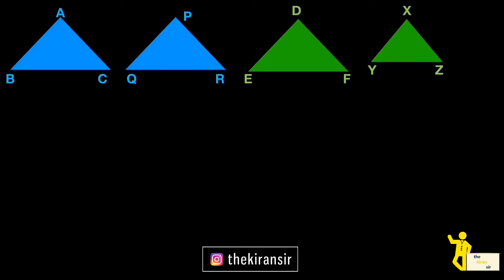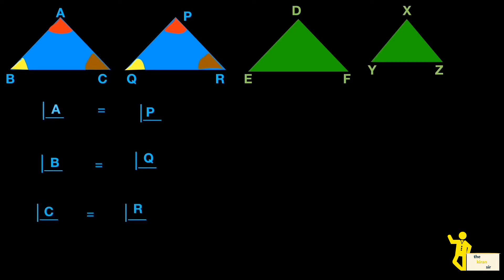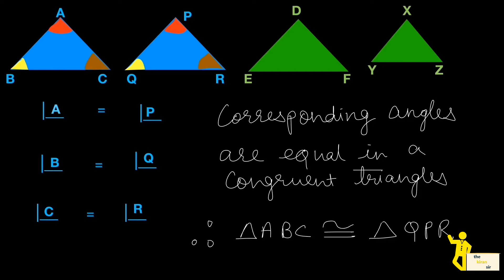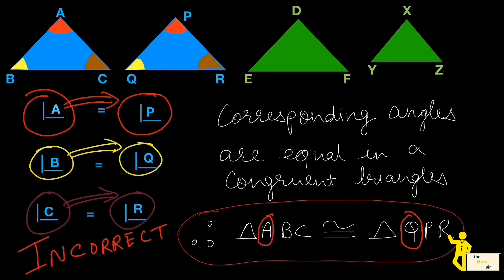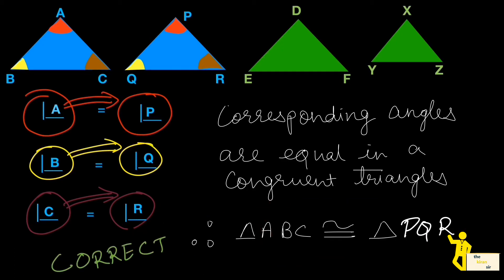Let's say two triangles ABC and PQR are congruent. In congruent triangles, all corresponding angles are equal: angle A equals angle P, angle B equals angle Q, and angle C equals angle R. There is also a proper way to write this. Triangle ABC is congruent to triangle PQR — you must write the vertices in the correct corresponding sequence. Since A corresponds to P, B to Q, and C to R, the correct notation is triangle ABC ≅ triangle PQR.